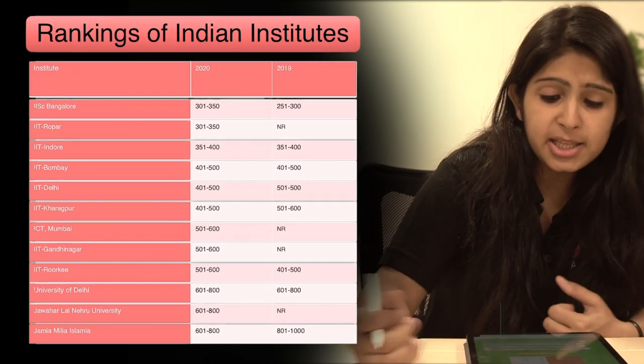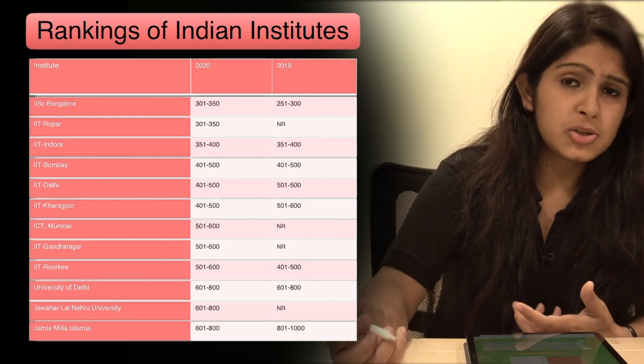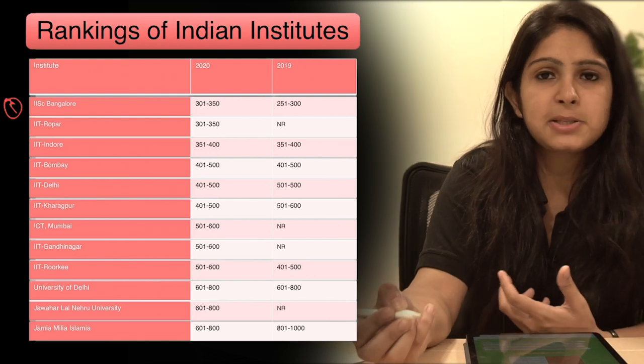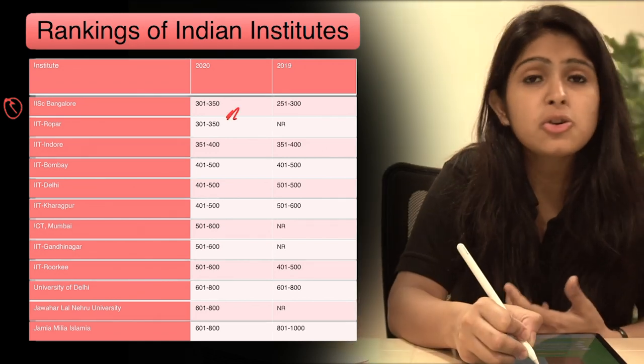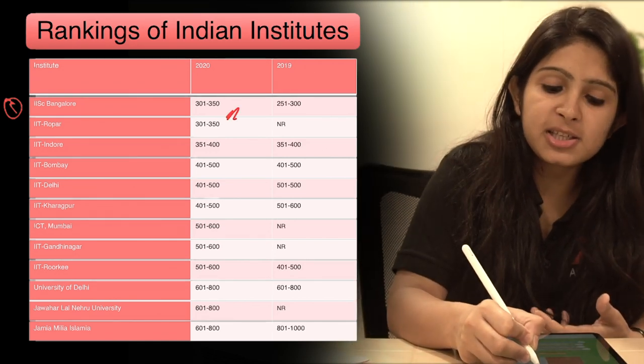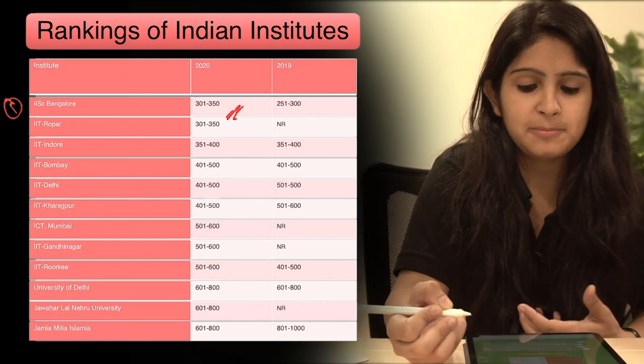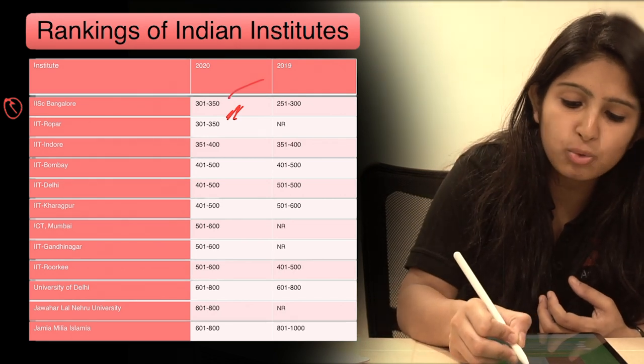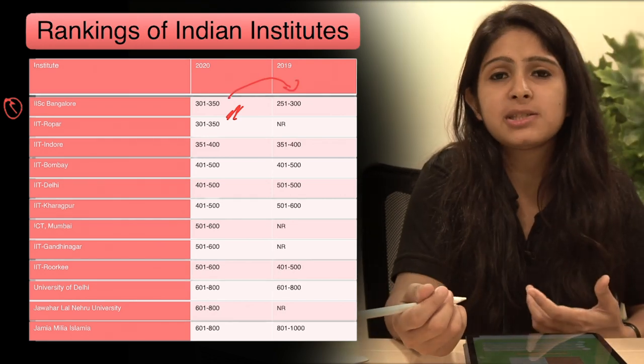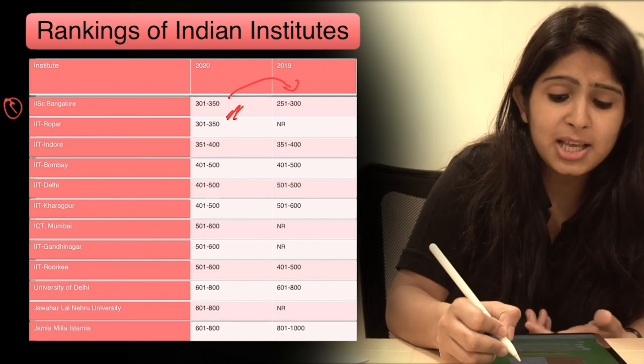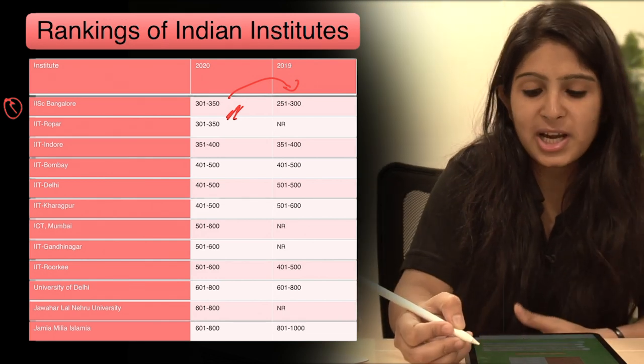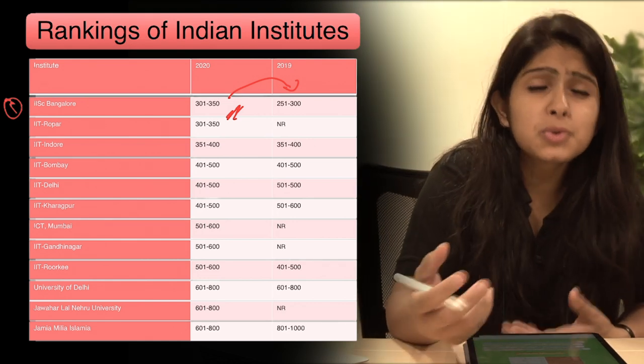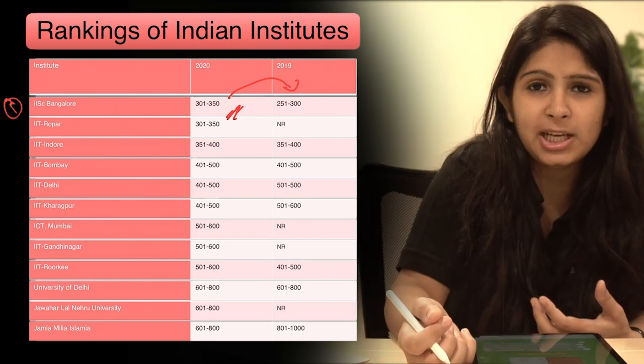If you look at this diagram, you can see number 1st position pe hai Indian Institute of Science Bangalore and the rank is 301 to 350. But yaha pe thodi dukhi hone wali baat ye hai ki last year ye rank higher thi jo 50 points se kam ho chuki hai. So last year Indian Institute of Science was ranked between 251 to 300, but now it has reduced to 301 to 350 rankings.